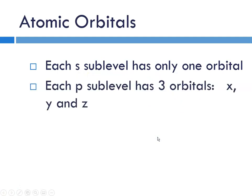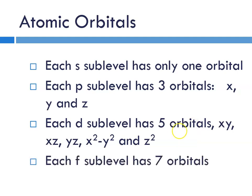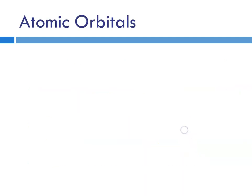Each P sublevel has three orbitals. They're called X, Y, and Z. Each D sublevel has five orbitals, and they're called XY, XZ, YZ, X squared minus Y squared, and Z squared. And each F sublevel has a total of seven orbitals, and I'm not going to get into their names right now.